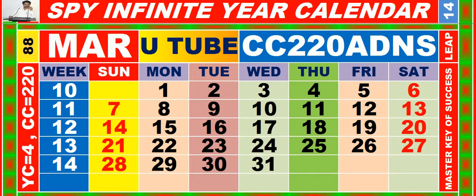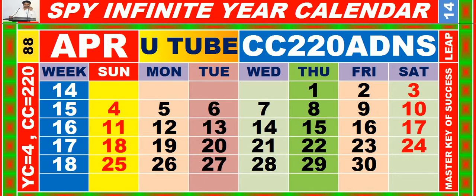Calendar for the month of March, having calendar code equal to 220. Calendar for the month of April, having calendar code equal to 220.